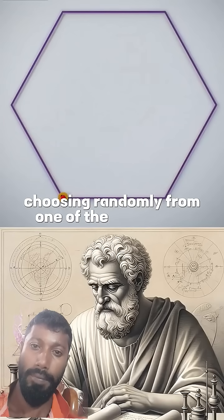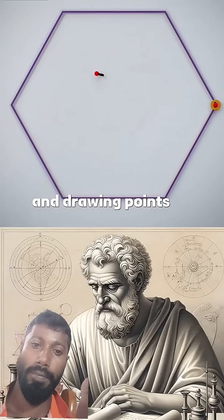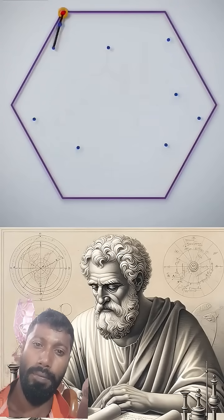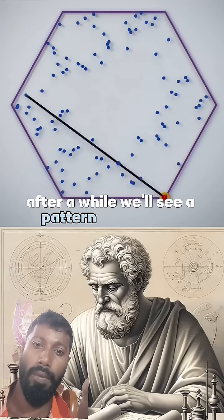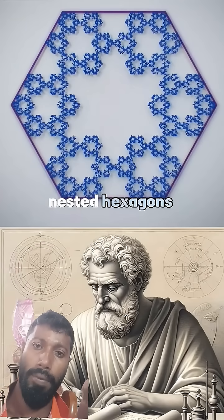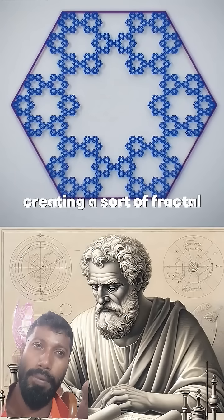Choosing randomly from one of the six corners and drawing points at two thirds of the line. After a while, we'll see a pattern of infinitely nested hexagons emerge, creating a sort of fractal snowflake.